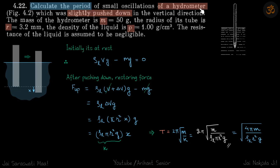Calculate the period of a hydrometer that is slightly pushed down. Mass is given, radius of hydrometer is given, and density of liquid is given. So let's say this is the stable position when the hydrometer is just floating, and then it is pushed down slightly by distance x.